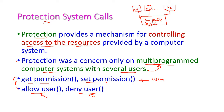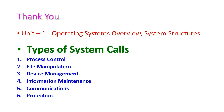So these are the system calls that come under the protection category. Up to this we have seen the types of system calls from the first unit — system calls are an important topic and you can expect one question in the university examination. The six categories are: process control, file manipulation, device management, information maintenance, communication, and protection. In the next class we will see system programming. Thank you.